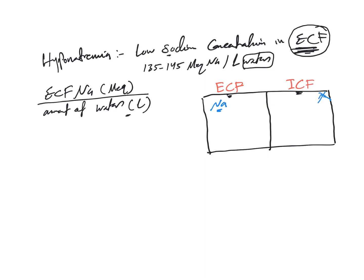Since sodium is confined to the extracellular fluid, the amount of sodium here based on the amount of water here will decide the sodium concentration, as we just discussed. The body's job is to keep the sodium concentration within this normal narrow range. To do that, the body monitors the extracellular fluid and provides the amount of water needed to keep this concentration. The main factor is the amount of water the body provides.